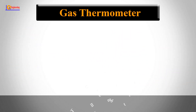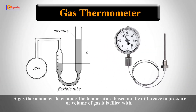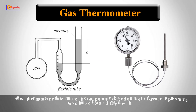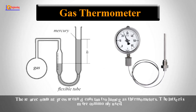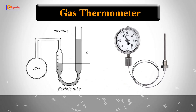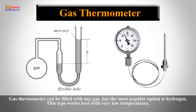Gas thermometer. A gas thermometer determines the temperature based on the difference in pressure or volume of gas it is filled with. There are constant pressure and constant volume gas thermometers; the latter is more commonly used. Gas thermometers can be filled with any gas, but the most popular option is hydrogen. This type works best with very low temperatures.